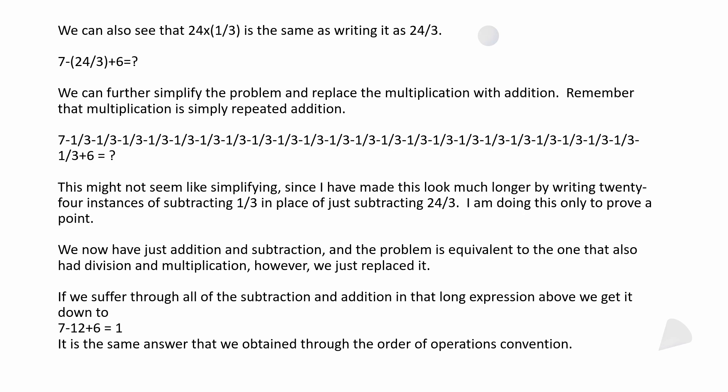I had to write out 24 instances of subtracting one third in place of just subtracting 24 thirds. I'm doing this to prove a point, so just bear with me. You now got your addition and subtraction, and the problem is equivalent to the one that also had division and multiplication. However, we just replaced it. So if we suffer through all of that subtraction and addition in that very long expression above, you're going to get that down to 7 minus 12 plus 6 equals 1. It's the same answer that we obtained through doing it by the order of operations convention.